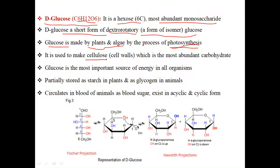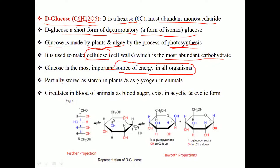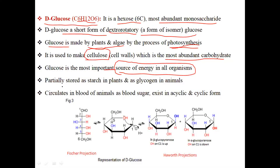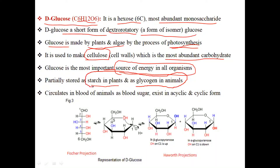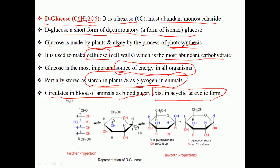Glucose is used to make cellulose, which is the component of cell walls in plants and the most abundant carbohydrate. Glucose is the most important source of energy for all organisms. It is partially stored as starch in plants and as glycogen in animals, both of which can be used in times of need. Glucose also circulates in the blood of animals and is known as blood sugar. It exists in both cyclic and acyclic forms.